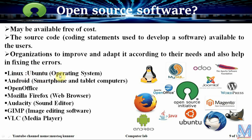Lubuntu can be used as an alternative to Microsoft Windows 10. Android is a best example of open source software, widely used in smartphones and tablet computers. Open Office is also open source and can be used as an alternative to MS Office. Mozilla Firefox is a web browser alternative to Internet Explorer or Google Chrome. Audacity is a sound editor, GIMP is an image editing software alternative to Adobe Photoshop, and VLC is an open source media player.